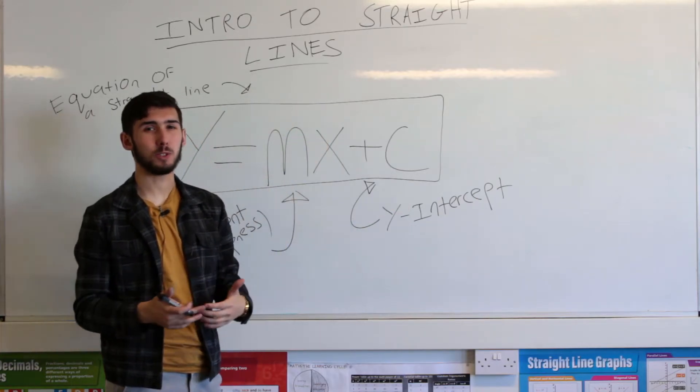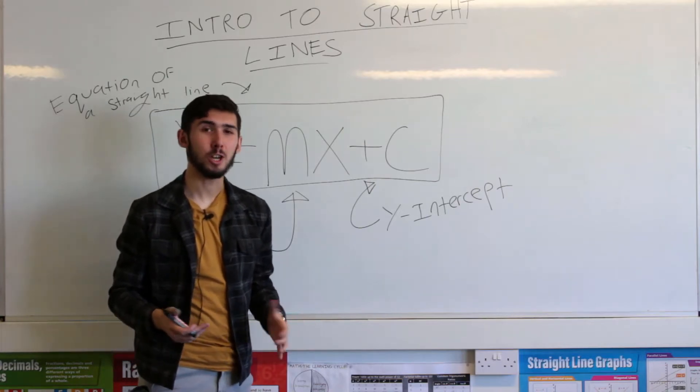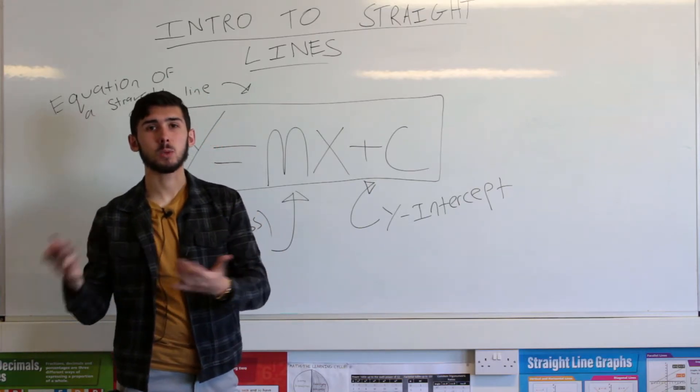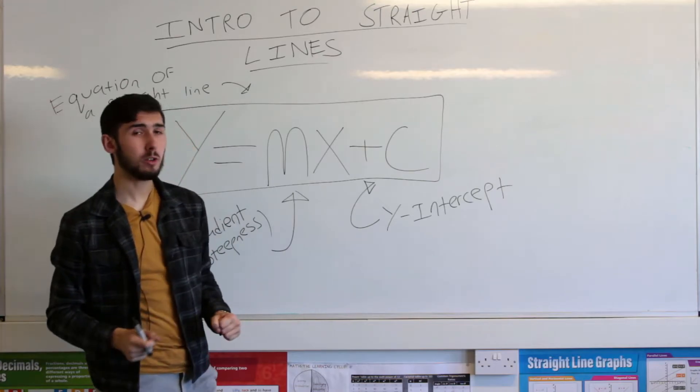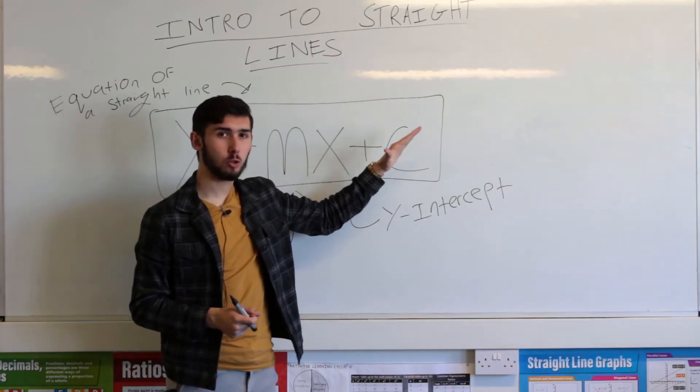Now, of course, you wouldn't actually write y equals infinity x plus c. You would just write x equals something. And again, we'll talk about that later. A gradient of one is a 45 degree angle.